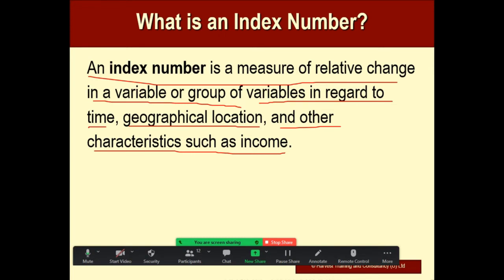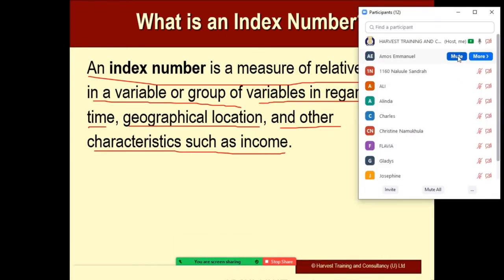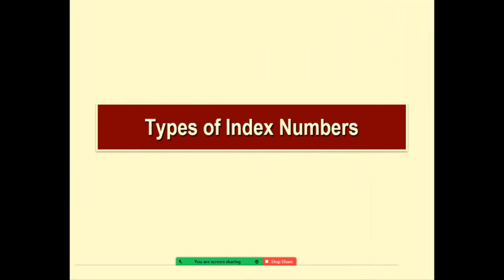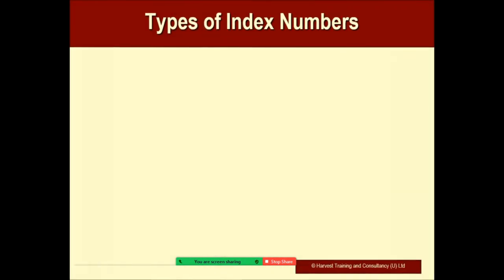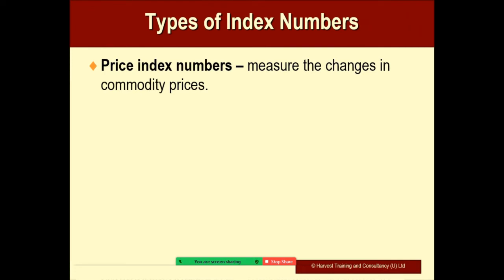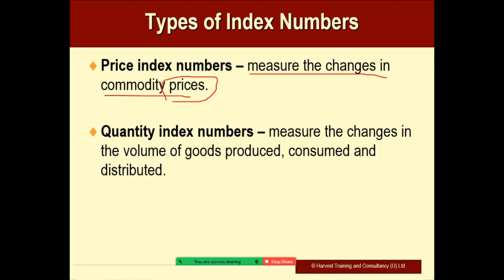Different types of index numbers include the price index numbers, which measure changes in commodity prices. Then we have the quantity index numbers, which measure changes in the volume of goods produced, consumed, and distributed.